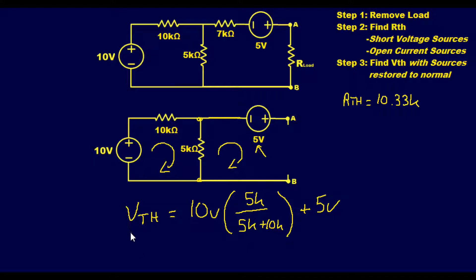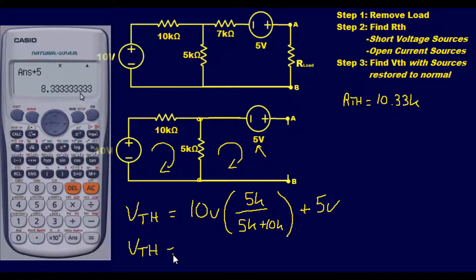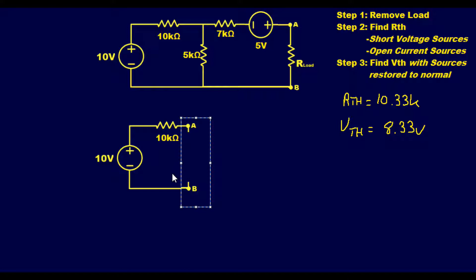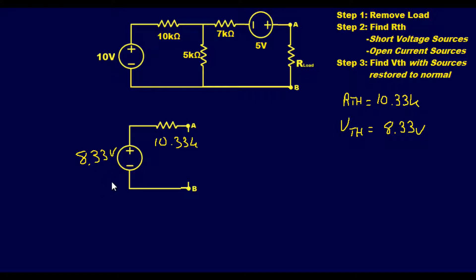Plugging into the calculator gives us a final answer of 8.33 volts. So our final Thevenin equivalent circuit has a 10.33k ohm resistance and an 8.33 volt power supply — just that simple. Again, what usually trips people up: if there's no current going through a resistor, it's not applicable.